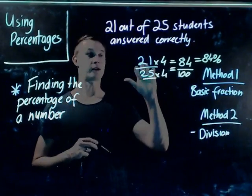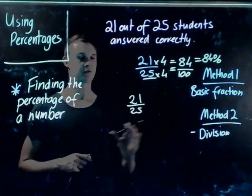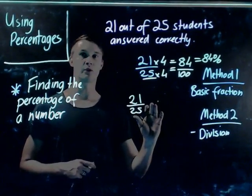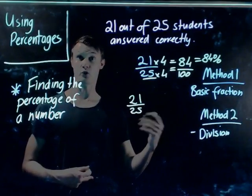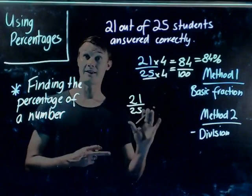Okay, so method two is using just simply division. Now when I set it up like this, I have 21 over 25. I'll write it again here: 21 over 25. Remember, this symbol in the middle here basically means division or divide, so I have 21 divided by 25.